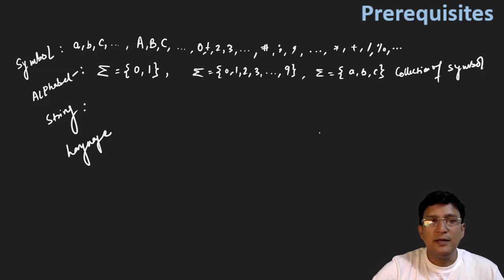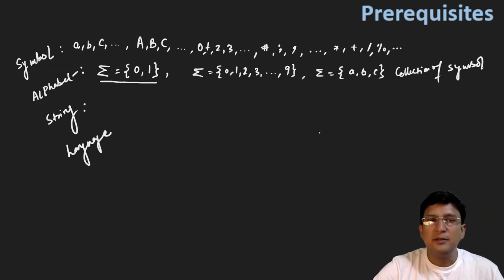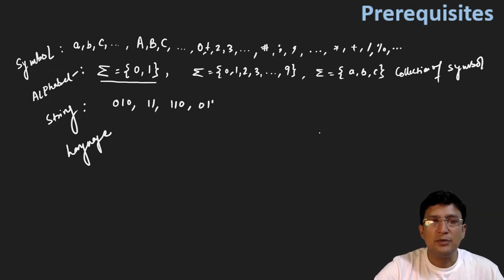Now, string — strings are the words that are formed from this alphabet. For example, if we have an alphabet set {0, 1}, meaning binary number system, then the strings that can be formed are: 0, 1, 0, 1, 1, 1, and so on. Any string which can be formed using 0 and 1 — so these are all the strings.